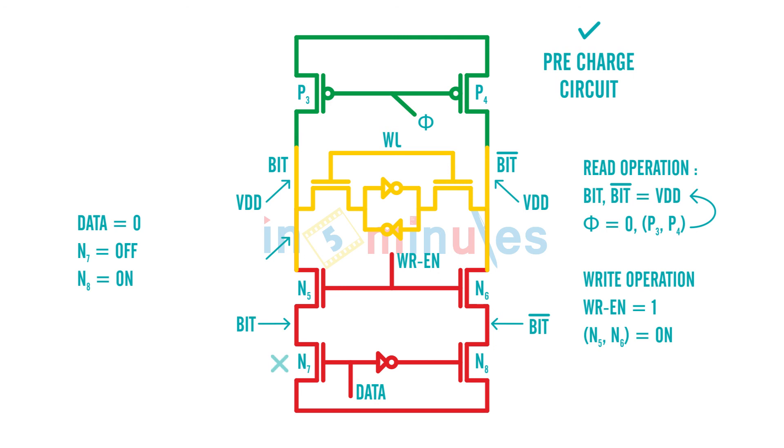Because N7 is off, do you all agree that bit does not have a path to go to ground and it will stay to VDD? And because N8 is on, bit bar will go to 0. And this is what we wanted for a write operation.